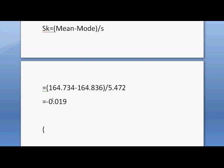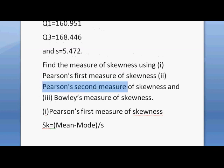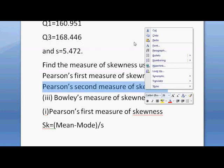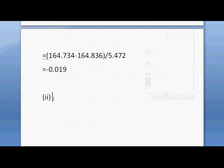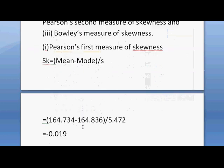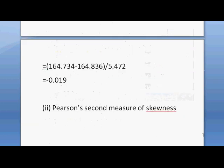Now find the skewness using Pearson's second measure of skewness. Pearson's second measure of skewness is given as: SK equals 3 times (mean minus median), divided by standard deviation.